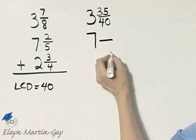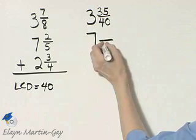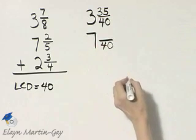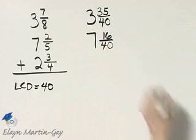7 and now let's work on 2 fifths. 5 times what number gives me 40? Well, 5 times 8 is 40. Keep in mind that 8 because we now need to multiply 2 times 8 and we have 16.